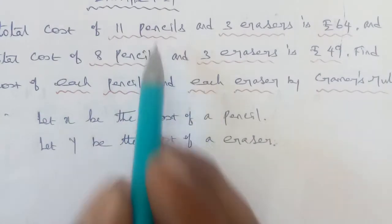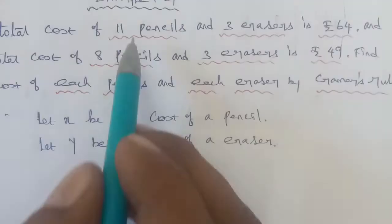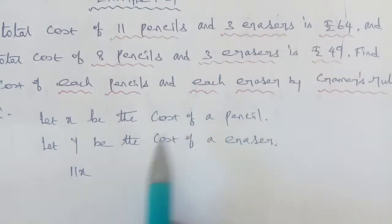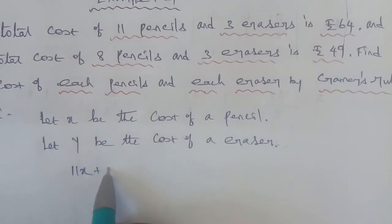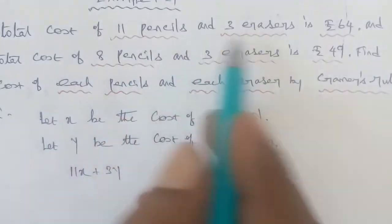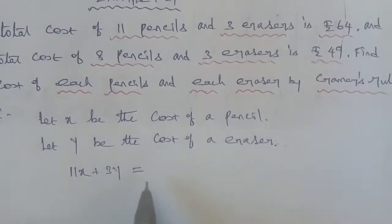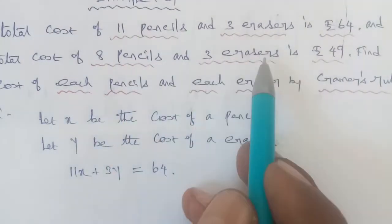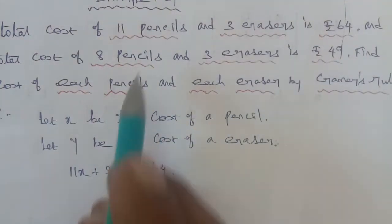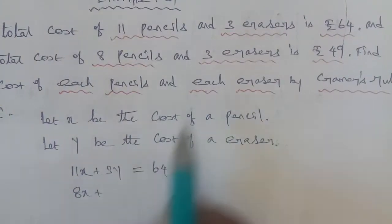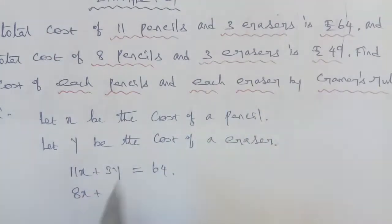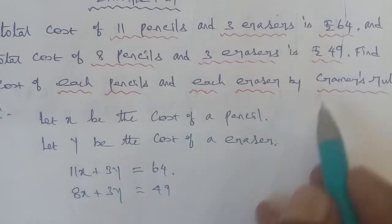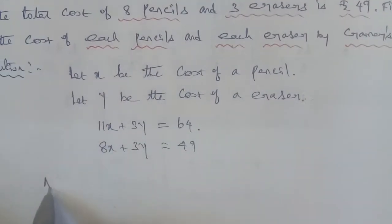So we need to form the equations. The first equation: 11x plus 3y equals 64, representing 11 pencils and 3 erasers costing 64. The second equation: 8x plus 3y equals 49, representing 8 pencils and 3 erasers costing 49.